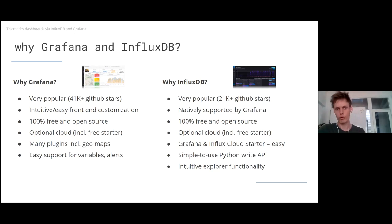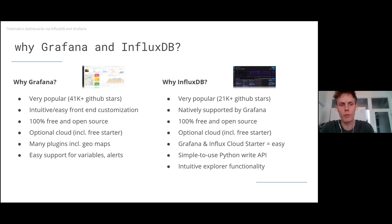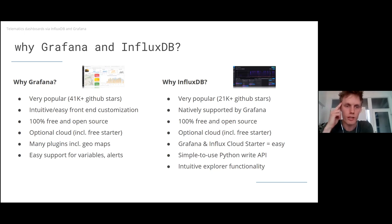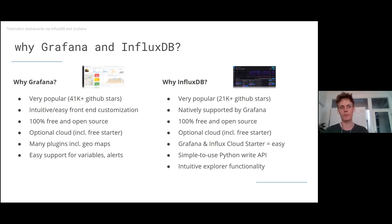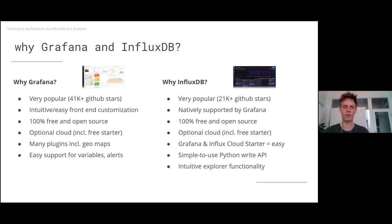It doesn't have to be these two solutions — you could use our Python API to integrate with others. But we needed something that worked well as a starting point for many of our users. We chose Grafana because it's perhaps the most popular open source dashboard tool available — you can see this from the 40K GitHub stars it has. Grafana is a nice and intuitive front end for customizing panels and dashboards. It's free and open source, has a nice optional cloud starter account, hundreds of plugins including GeoMap plugins, and easy support for variables and alerts.